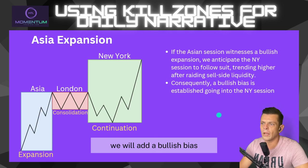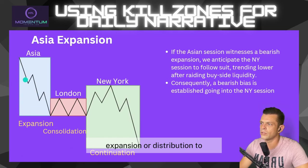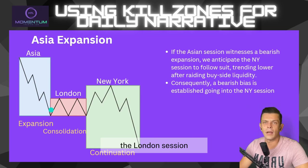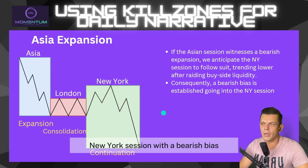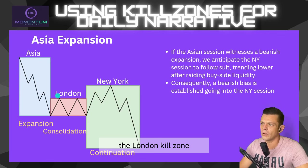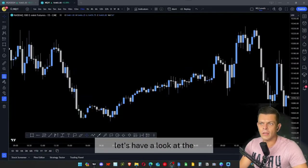If the Asia session had a bearish expansion to the downside, we still refrain from trading London, but enter the New York session with a bearish bias. We anticipate the New York open to dig into the buy-side liquidity induced during the London kill zone, then look for a short position after a bearish market structure shift during the New York kill zone.